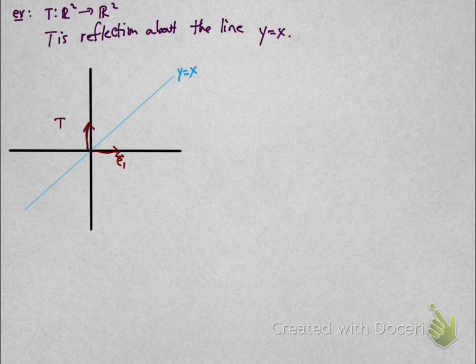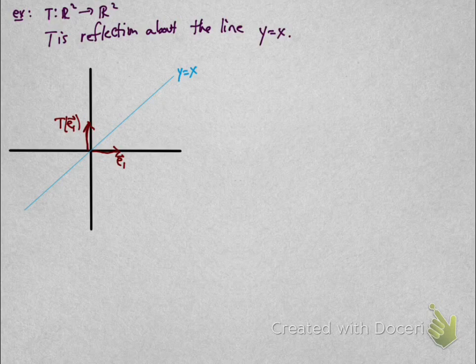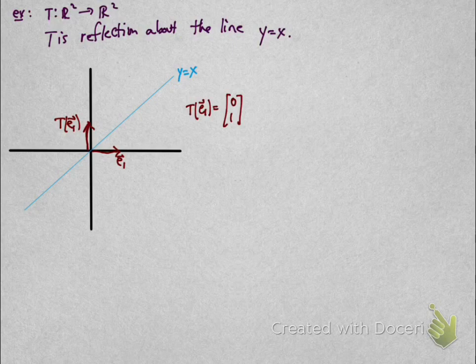For E_1, if I reflect, this is the image of E_1 under the map T. So T(E_1) is the vector (0,1).